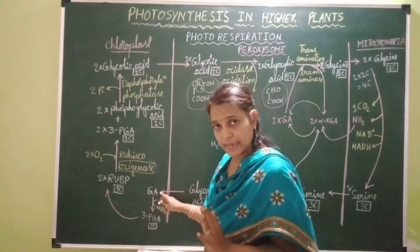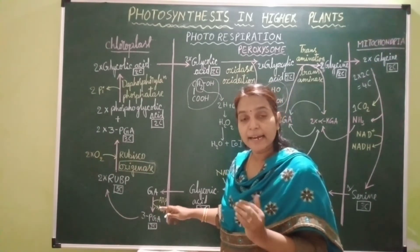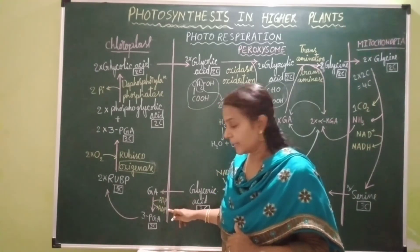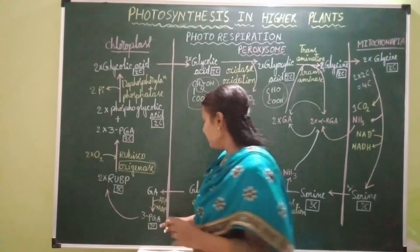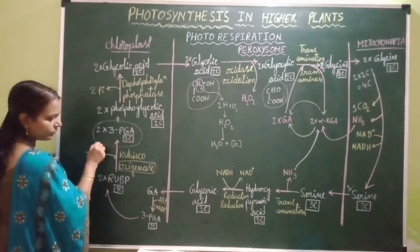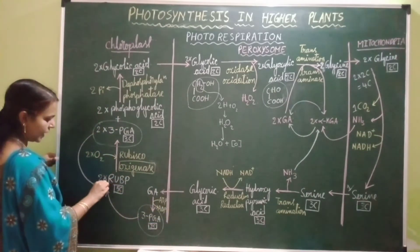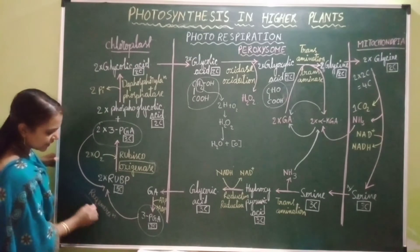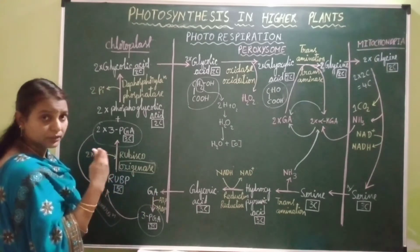Inside the chloroplast, glyceric acid undergoes phosphorylation — addition of a phosphate donated by ATP, which is converted into ADP — resulting in the formation of 3-phosphoglyceric acid (3-PGA), a three-carbon compound. This one molecule of 3-PGA together with the two molecules of 3-PGA formed earlier undergo regeneration into RuBP, which can re-enter the C3 pathway.